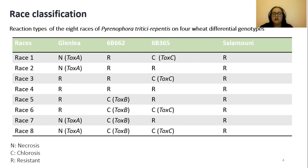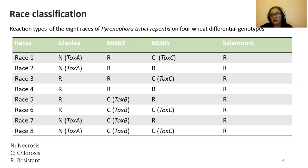As a reminder, to date, PTR isolates are classified into eight races based on their ability to induce necrosis or chlorosis symptoms on the differential lines Glenlea, 6B662, 6B365, and Salamouni.